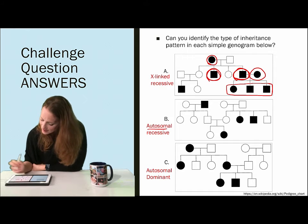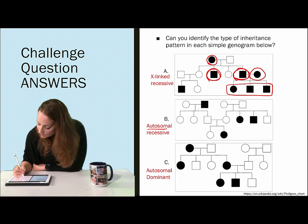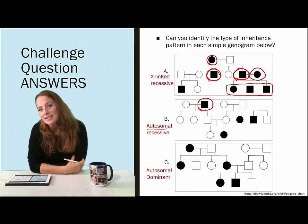Autosomal recessive. In this genogram we have one male in the parent generation that's affected.